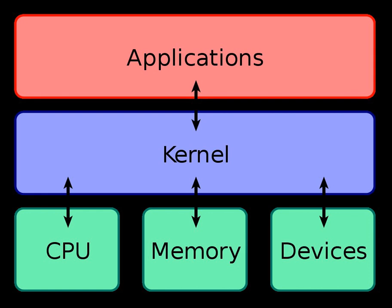Monolithic kernels are designed to have all of their code in the same address space, which some developers argue is necessary to increase the performance of the system. Some developers also maintain that monolithic systems are extremely efficient if well written. The monolithic model tends to be more efficient through the use of shared kernel memory, rather than the slower IPC system of microkernel designs, which is typically based on message passing.